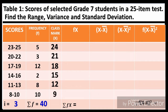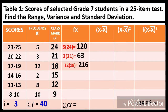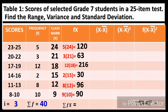The next column is F times X, meaning we multiply the frequency by the class mark. So: 5 × 24 = 120, 3 × 21 = 63, 12 × 18 = 216, 2 × 15 = 30, 8 × 12 = 96, and 10 × 9 = 90. Adding these: 120 + 63 + 216 + 30 + 96 + 90 = 615.